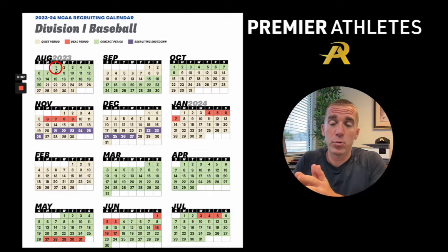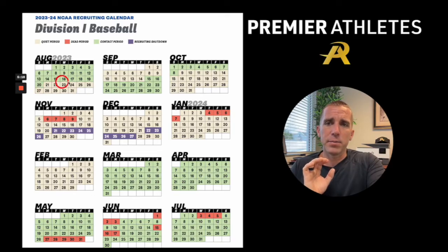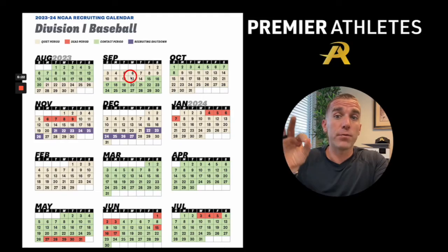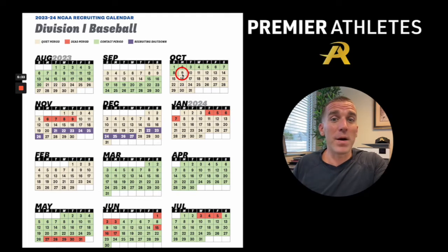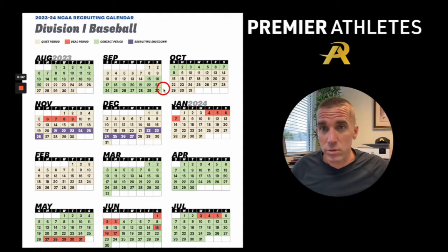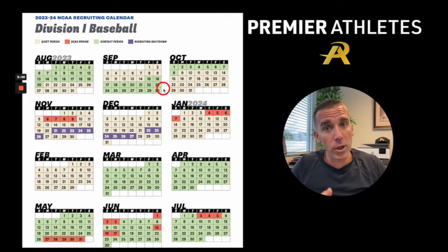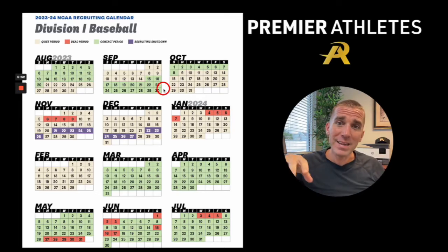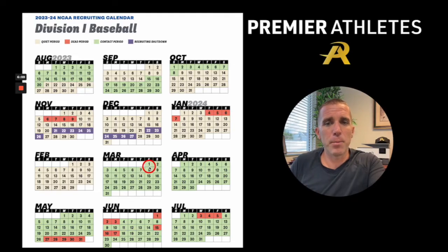We stay in the contact period all the way until the 20th of August. If you're going to tournaments for recruiting purposes looking for exposure, during the quiet period — which starts August 21st and again in October starting the 9th — no college coaches from Division I or Division II are going to be there. It's a waste of time and money to do travel ball or tournaments during the quiet period. It is worthwhile to attend camps during the quiet period because college coaches will be there to evaluate you and watch you play at their specific camps. That runs all the way through February, then we get back into the contact period on March 1st.